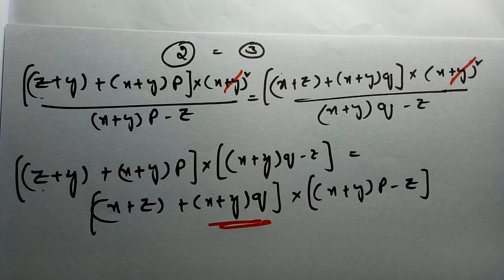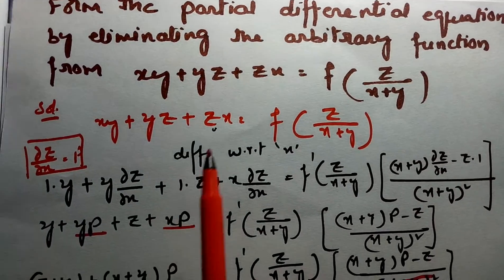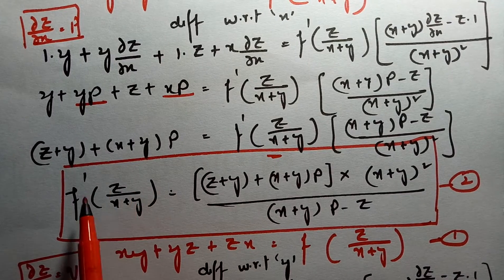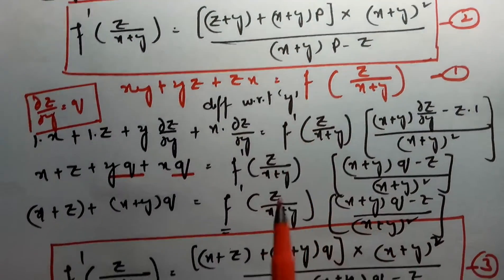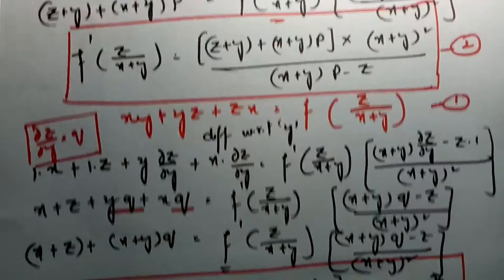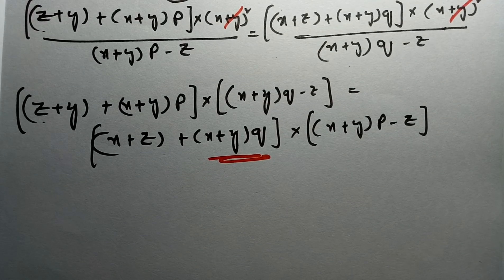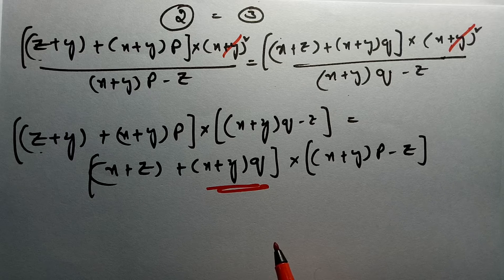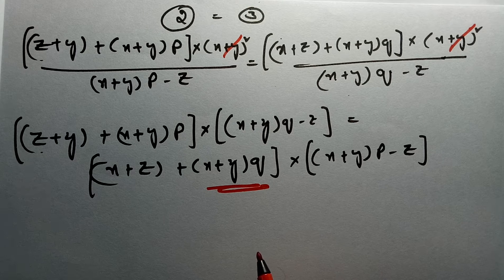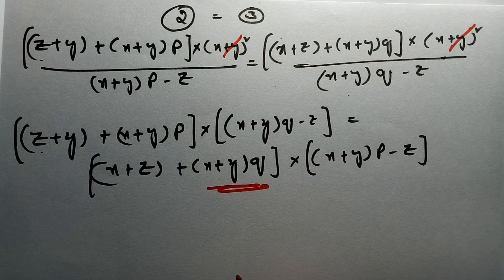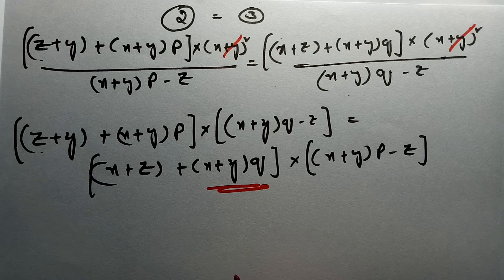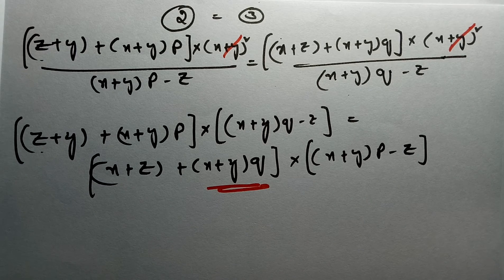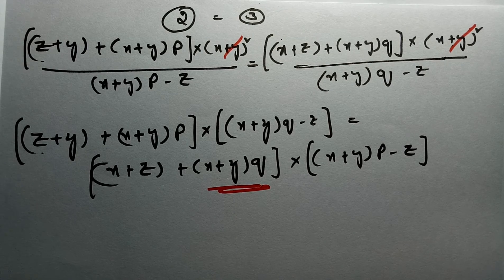This is also so simple. First, we have equation 1. We differentiate with respect to x and take the value of f'(z/(x+y)), then differentiate with respect to y and get the f'(z/(x+y)) value again. Equating these, we can eliminate the functions. The general method is: differentiate with respect to x, then with respect to y, and if not sufficient, go further. I hope you will watch my next video where I share solutions to important problems. Keep watching, stay tuned, and if you like the video, please give a thumbs up, subscribe to my channel, share it with your friends, and leave a comment below. Have a nice day.